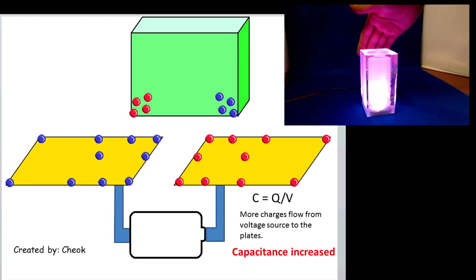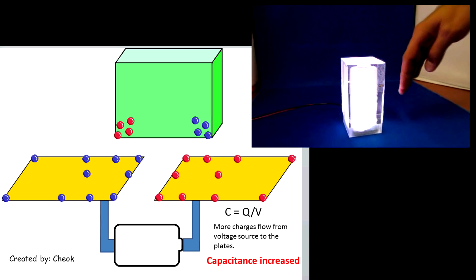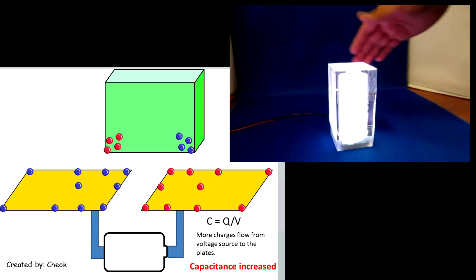So even when the external object is not physically connected to any of the plates, it is still capable of influencing the capacitance.